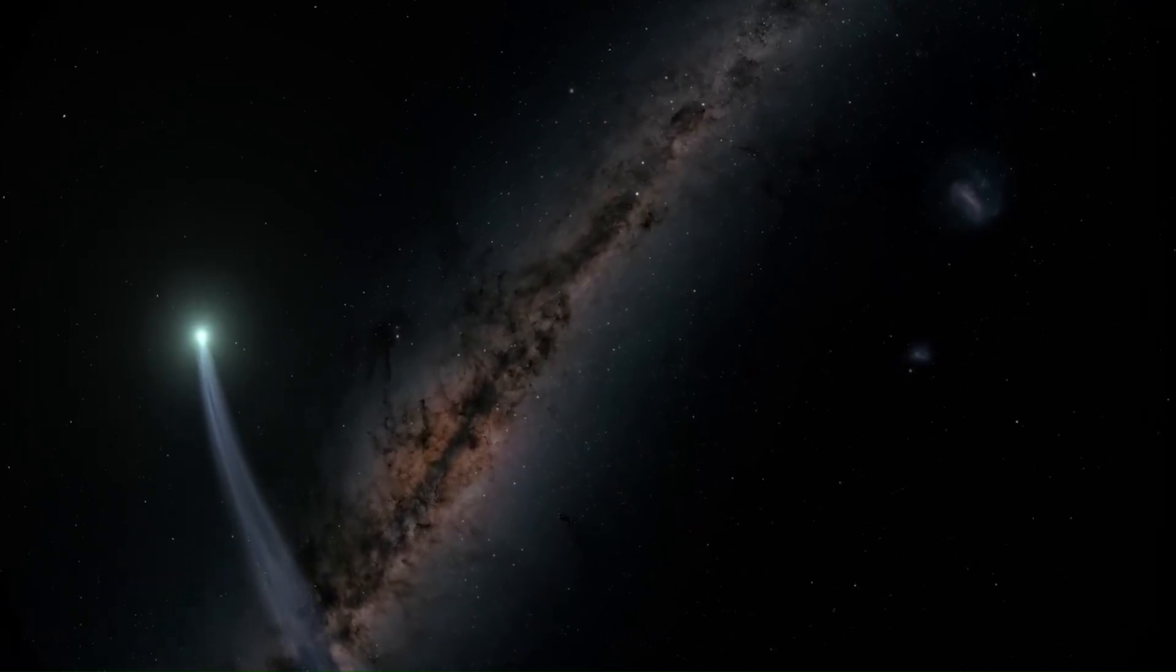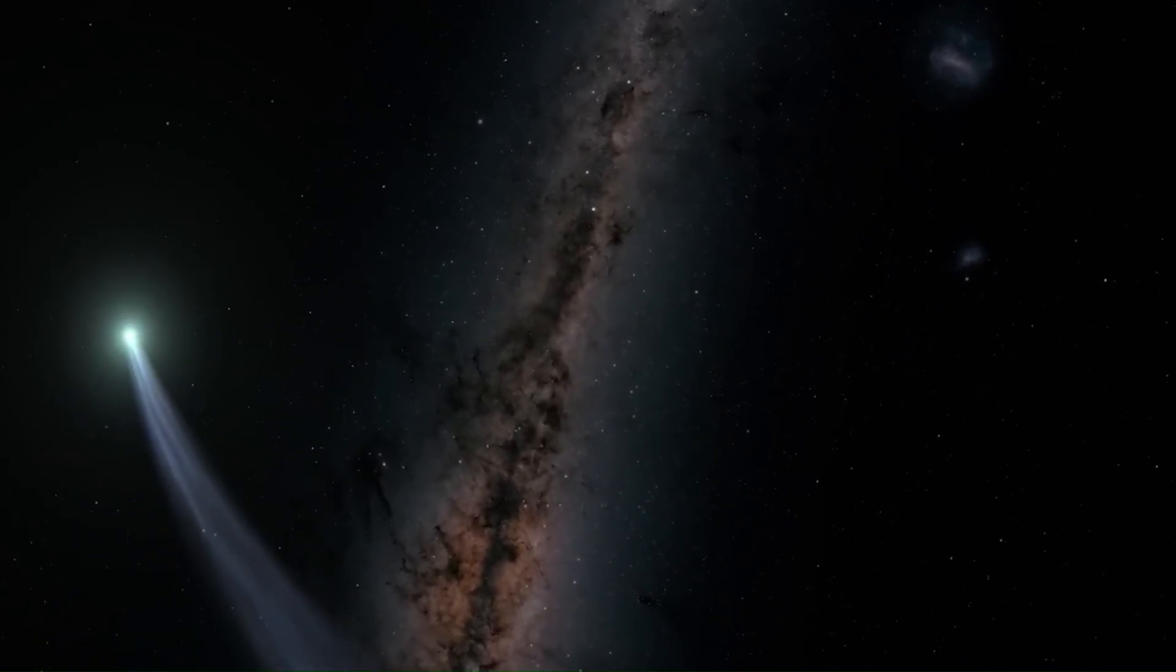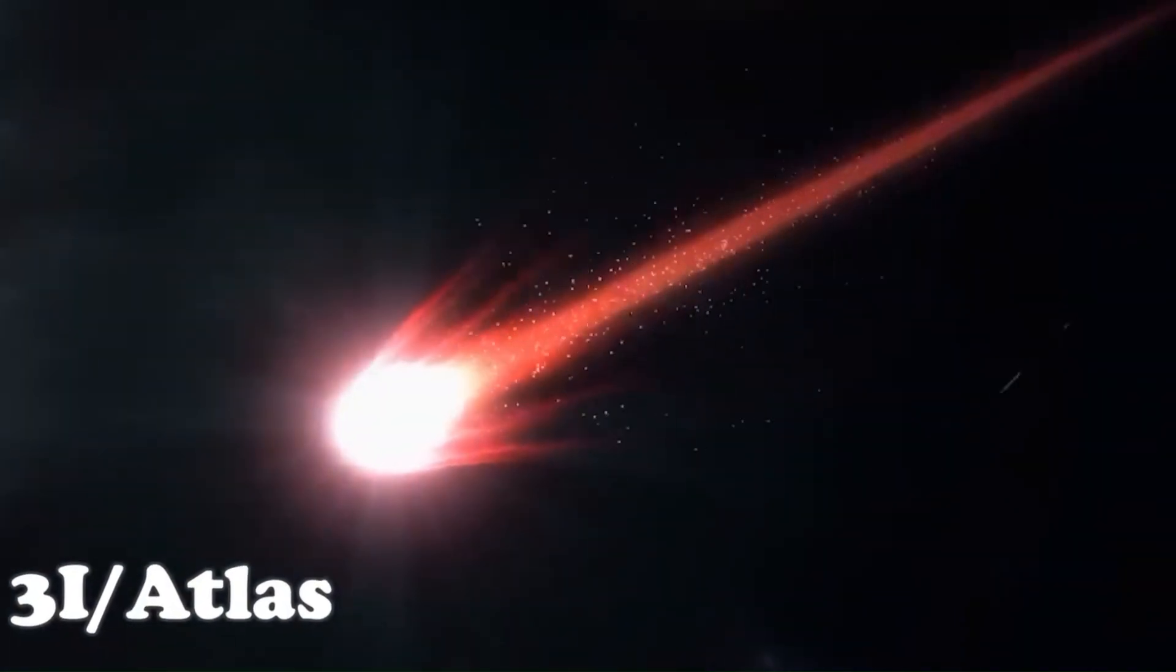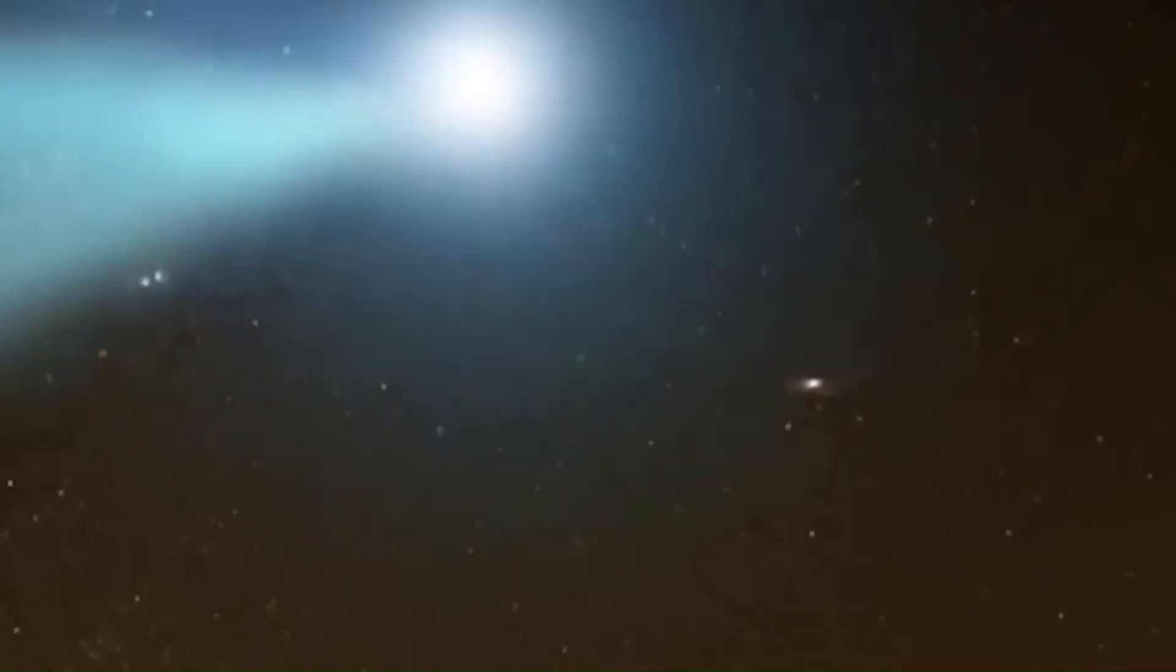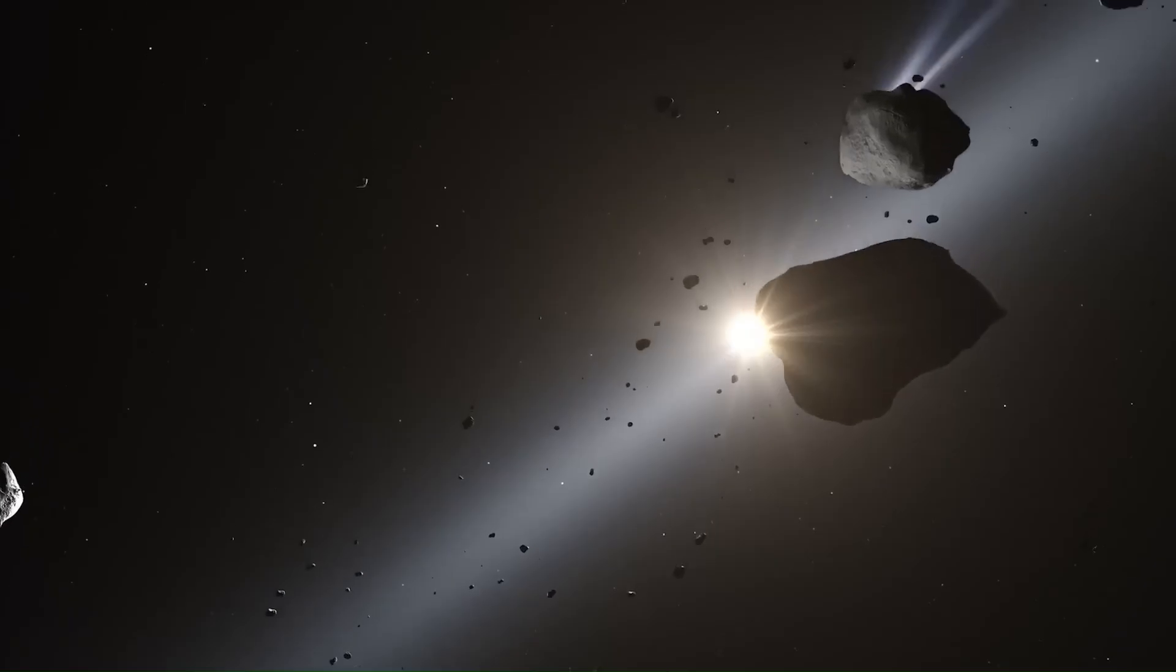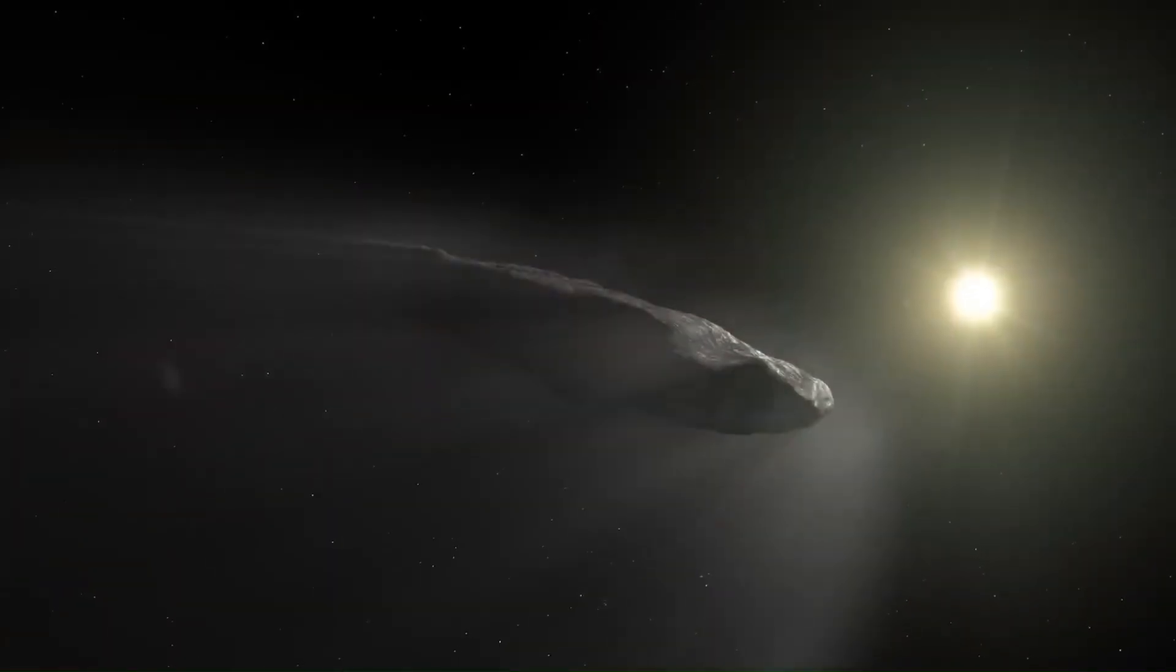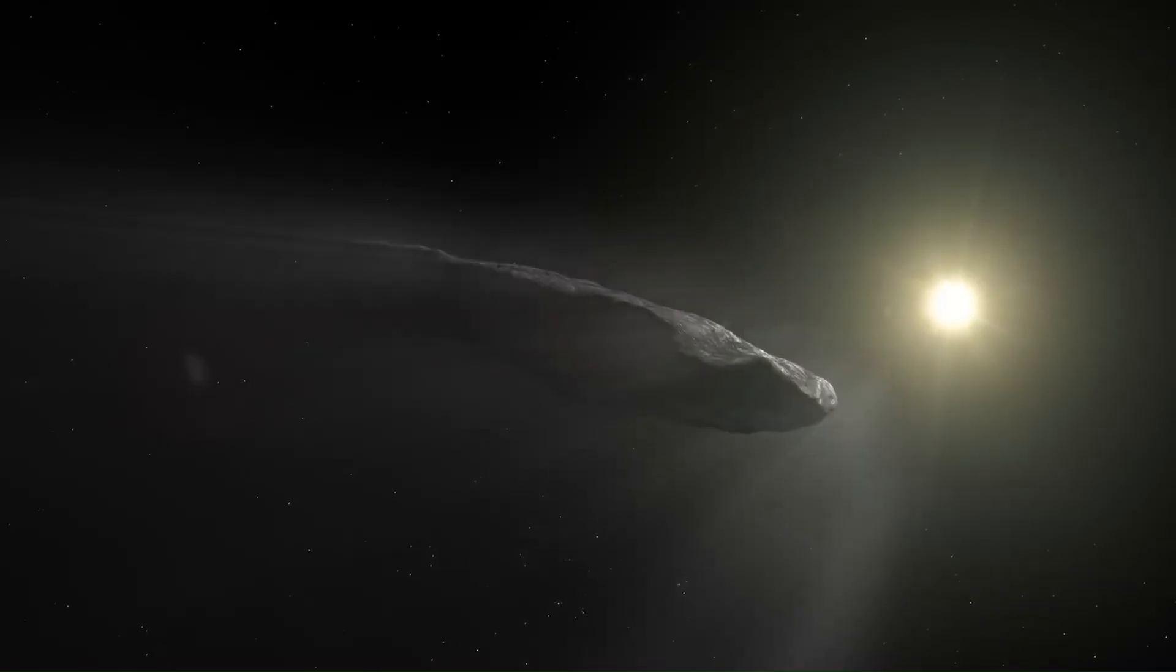Interstellar objects are rare. They are comets or asteroids that formed outside our solar system but pass through it briefly. Most objects in space move in predictable orbits around the sun, but these visitors come from unusual angles at very high speeds. Oumuamua, spotted in 2017, was the first we ever saw. Its shape was highly elongated, possibly like a cigar or thin disc, and its behavior was unlike any comet or asteroid we've studied.